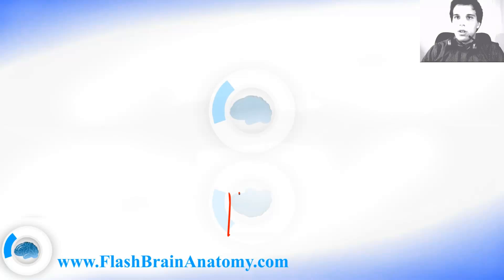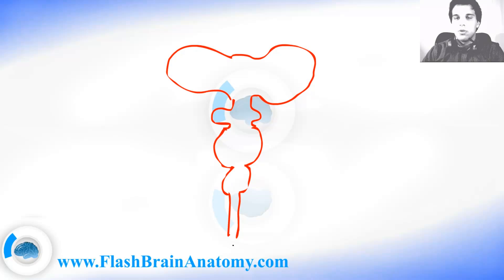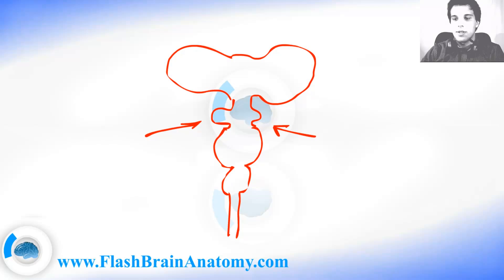First I will illustrate how the brain is being developed. We had the neural tube, which kind of develops into some neural bubbles. Here you have one bubble, then another bubble, and then you have something like this. At the end it has this kind of shape. This part of the neural tube is what develops itself into the diencephalon.